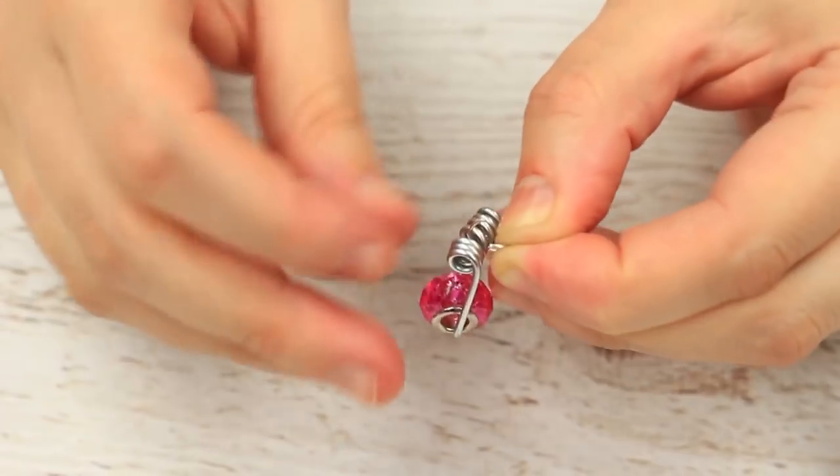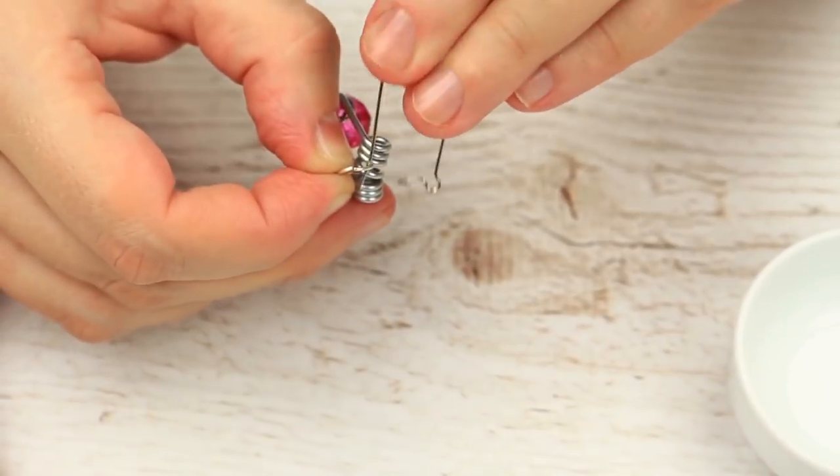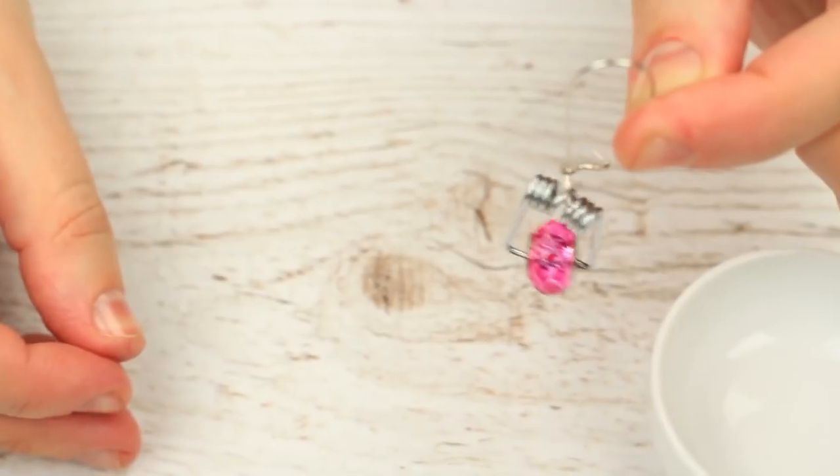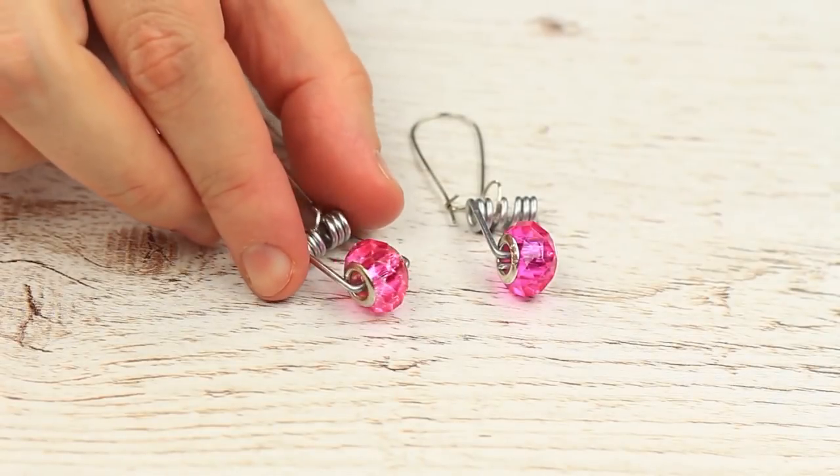Put a jump ring in the center of the spring. Put on a kidney ear wire. Repeat for the second earring. These metal earrings look cool and you'll surprise your friends when you tell them what they are made of.